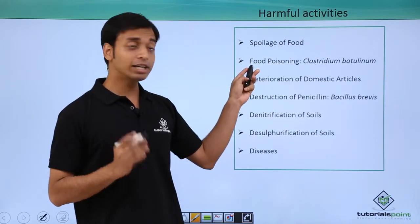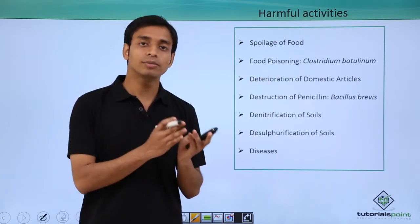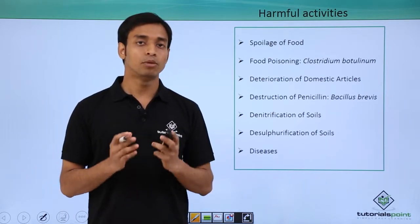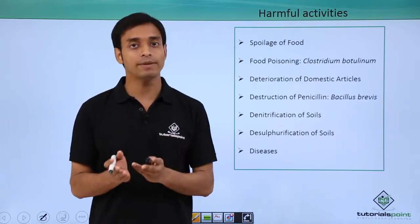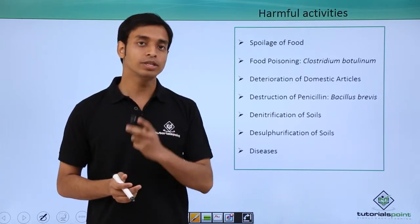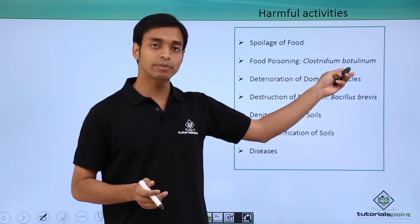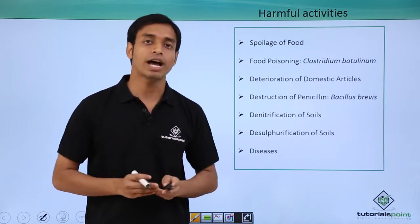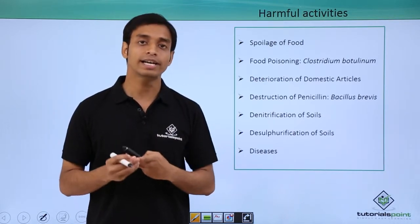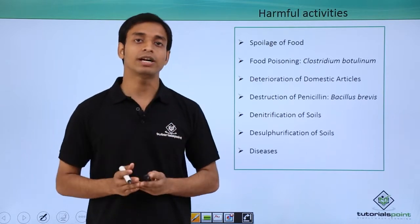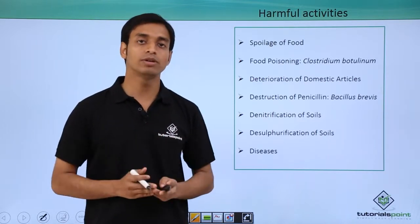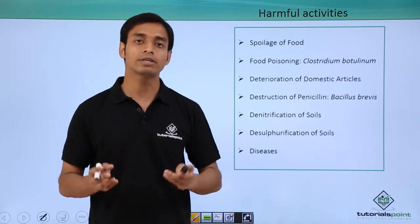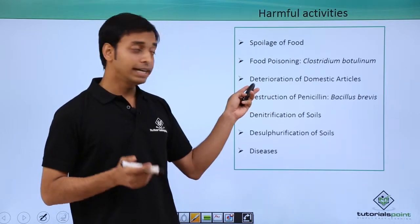Bacteria also cause food poisoning, which is one of the most common diseases in human beings. For example, botulism is a type of food poisoning caused by an organism known as Clostridium botulinum. Other types of food poisoning include diarrhea and vomiting, so these bacteria are responsible for various types of food poisoning diseases in human beings.